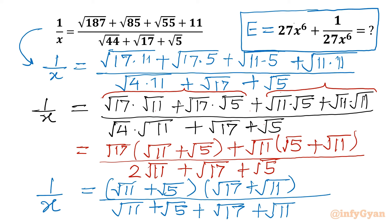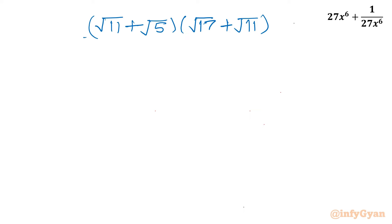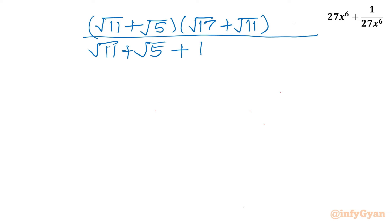So let me write here: 1 over x equals (root 11 plus root 5) times (root 17 plus root 11), and the denominator is (root 11 plus root 5) plus (root 17 plus root 11). And this is our 1 over x.